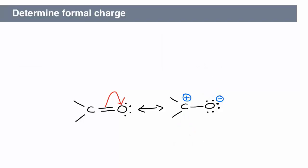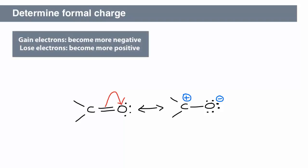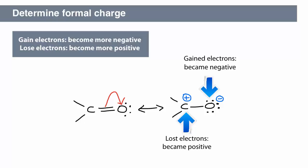We can also look at whether an atom has gained or lost electrons to determine the formal charge. Gaining electrons makes the atom more negative. Losing electrons makes it more positive. In this example, the oxygen started out neutral and gained electrons, so it became negative. The carbon started out neutral and lost electrons, so it became positive.